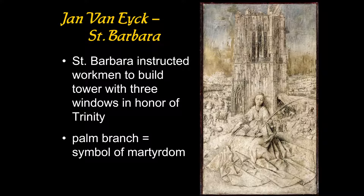The three windows were to be in honor of the Holy Trinity. Her father came back and asked why she changed the design, and she told him it was because she was a Christian, and three windows symbolized the Holy Trinity. Her father was furious and tried to kill her. She fled from him, there were all sorts of near misses, and he was struck by lightning and killed. Eventually Barbara was martyred as a Christian, and we see her with the palm branch — the symbol of martyrdom.